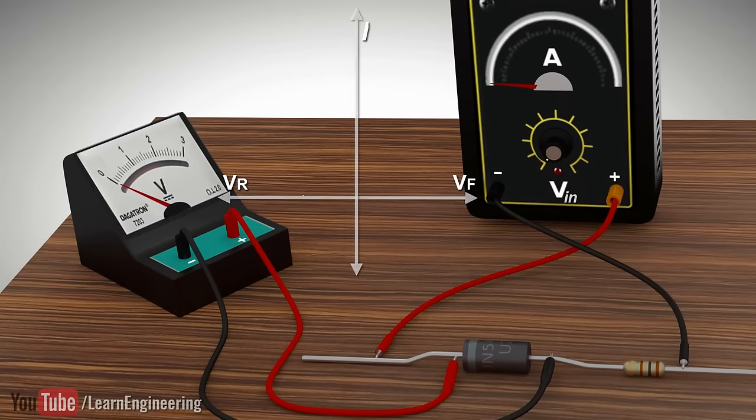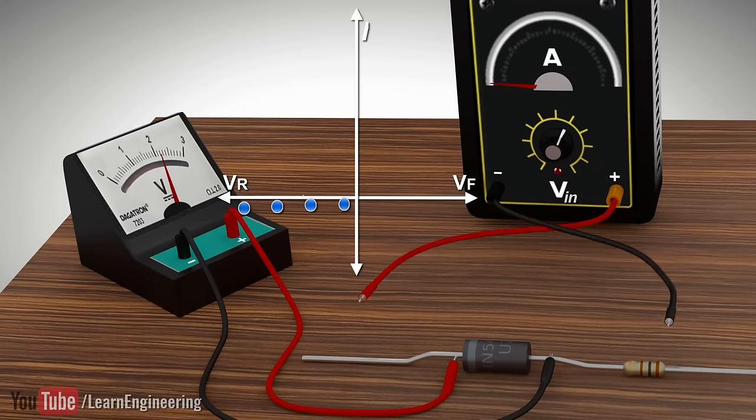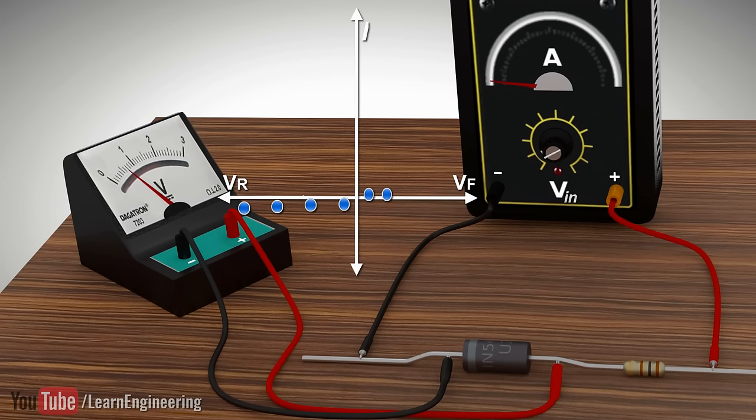Now let's vary the input voltage and study the diode's response to it. In reverse voltage, as explained, you can observe a negligible electricity flow. In the forward condition up to 0.7V, you will find a negligible electricity flow. But right after crossing this barrier potential value, there will be a steep increase in the current flow.